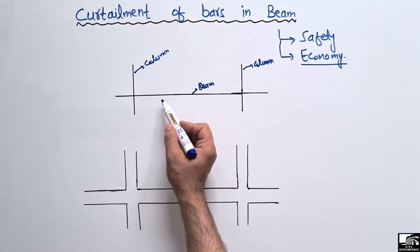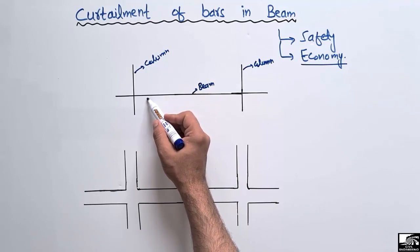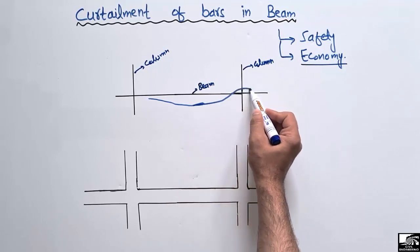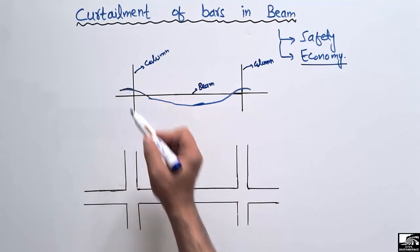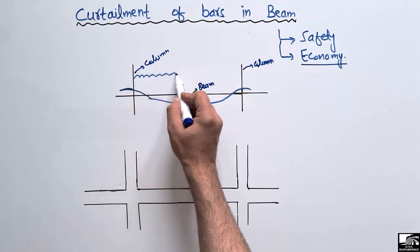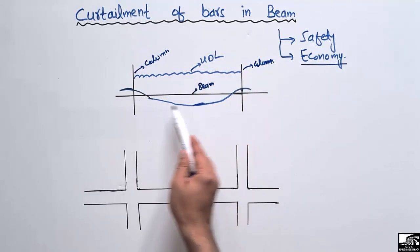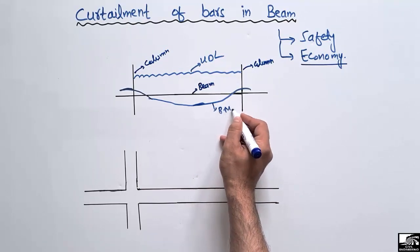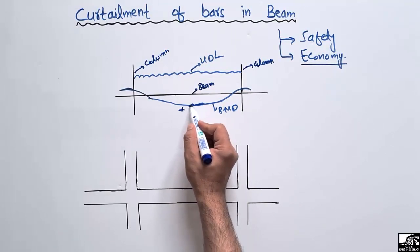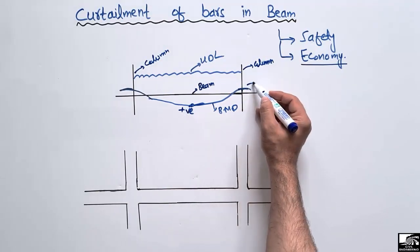If we look at the beam upon loading, it will show some bending moment. If you draw the bending moment diagram for this structure under a uniformly distributed load (UDL), it will show maximum bending moment at the center of the beam. This is the bending moment diagram for the continuous beam — maximum positive bending moment at the mid-section, and negative bending moment at the column supports.